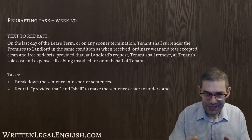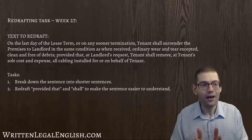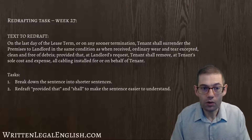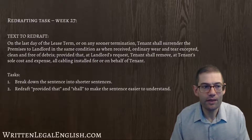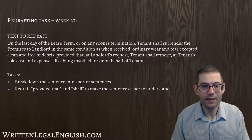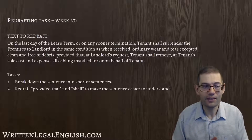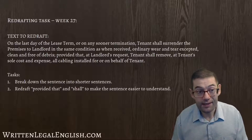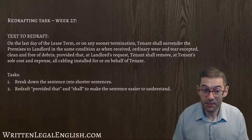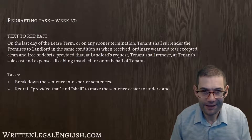Okay, so this is the first text I would like you to look at from this lease contract. On the last day of the lease term or on any sooner termination, tenant shall surrender the premises to landlord in the same condition as when received, ordinary wear and tear excepted, clean and free of debris, provided that, at landlord's request, tenant shall remove, at tenant's sole cost and expense, all cabling installed for or on behalf of tenant.